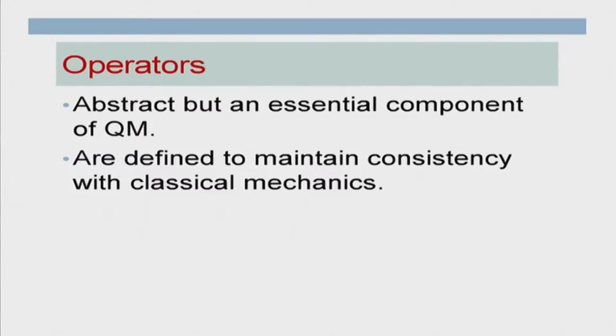Now we define certain quantities called operators. Operators are a very abstract concept and they are defined in order to maintain consistency with classical mechanics. Without going into full detail in this course, one can see in advanced quantum mechanics that these operators have been defined so that eventually we have consistency with classical mechanics — because we know classical mechanics does work for bigger particles. Quantum mechanics should lead to classical mechanics in the limit of bigger particles.